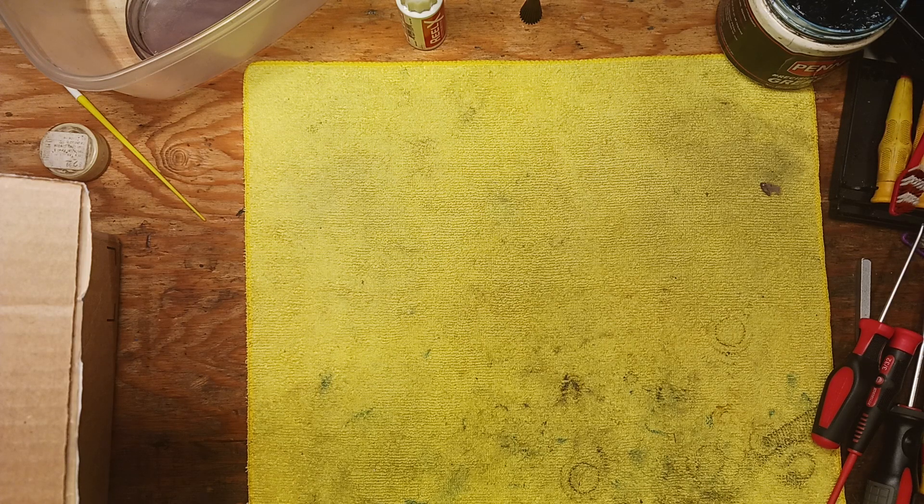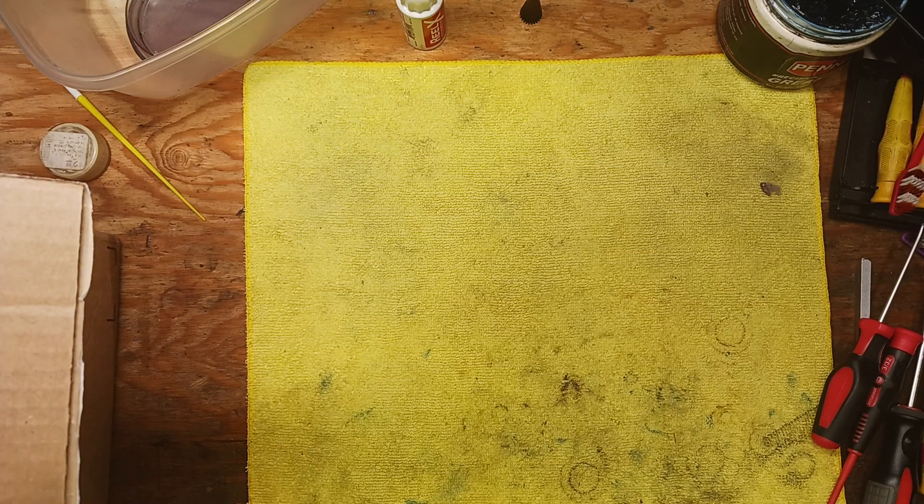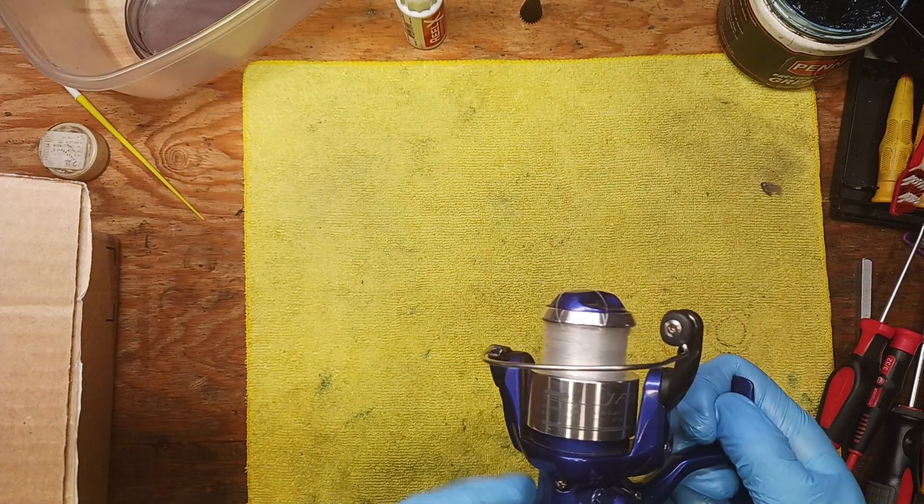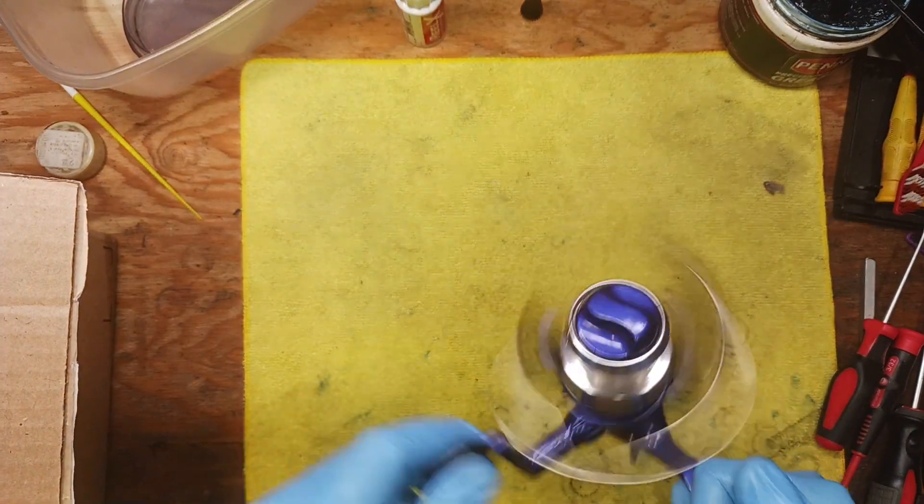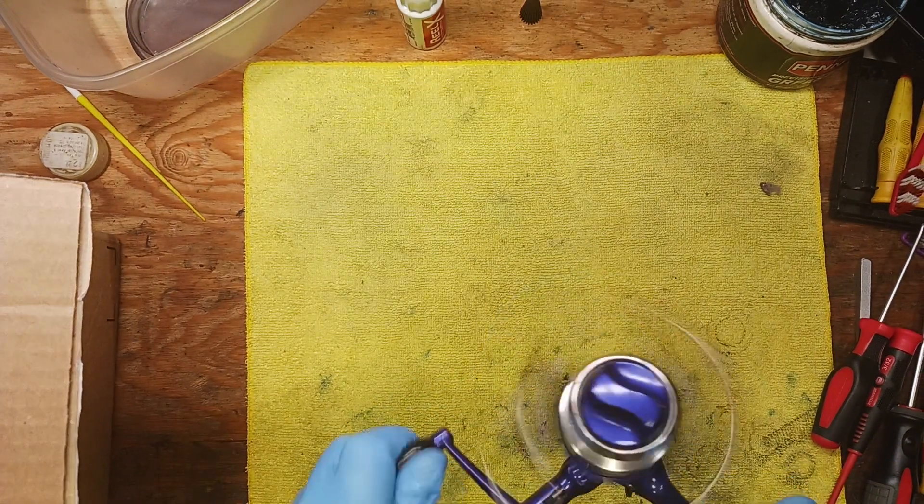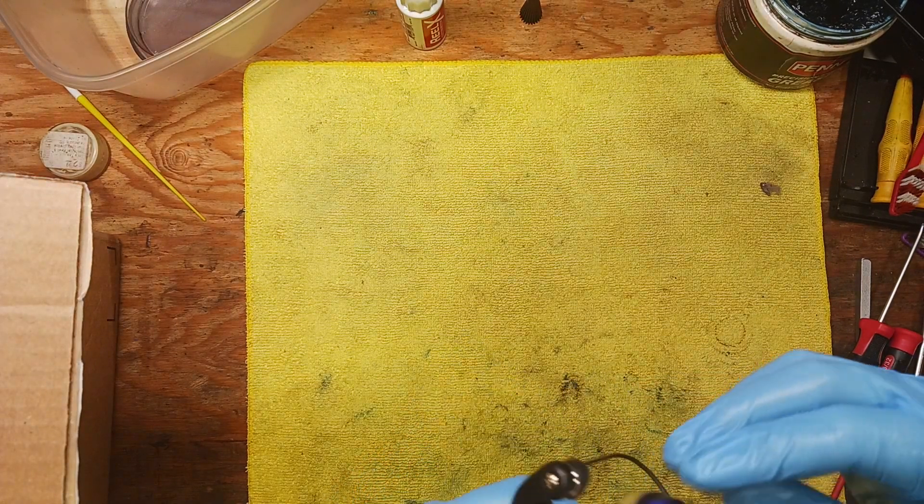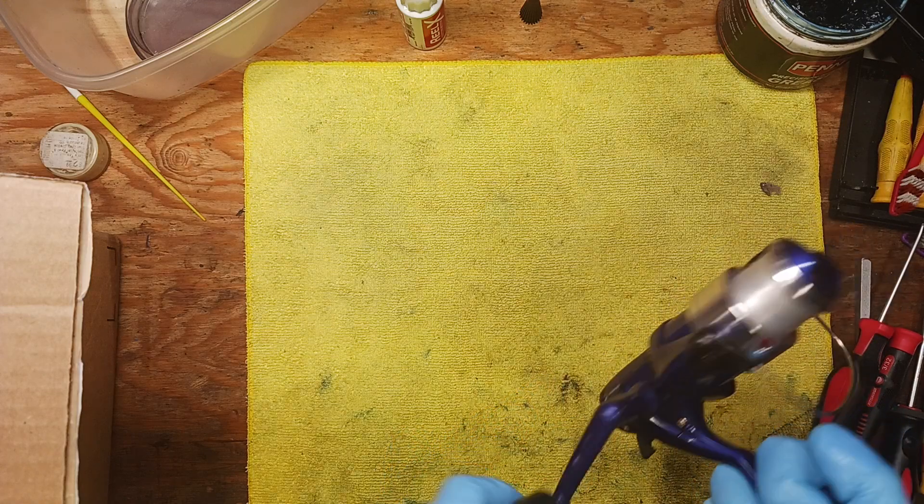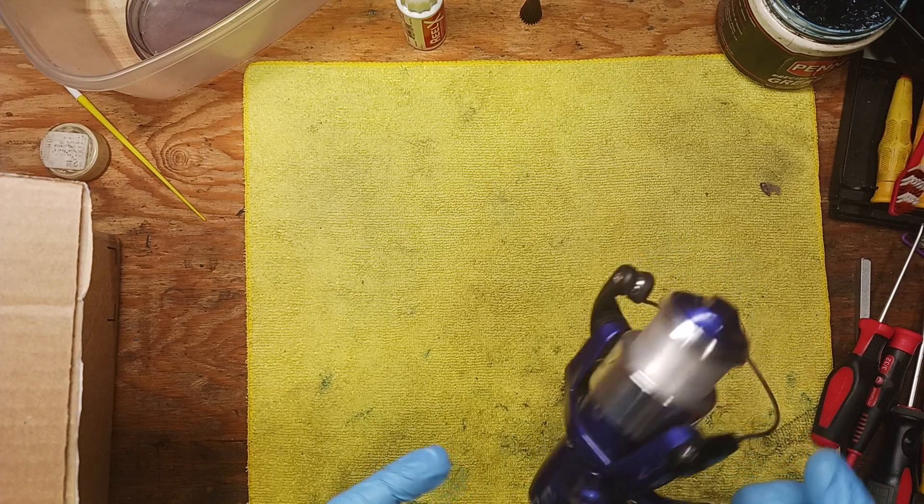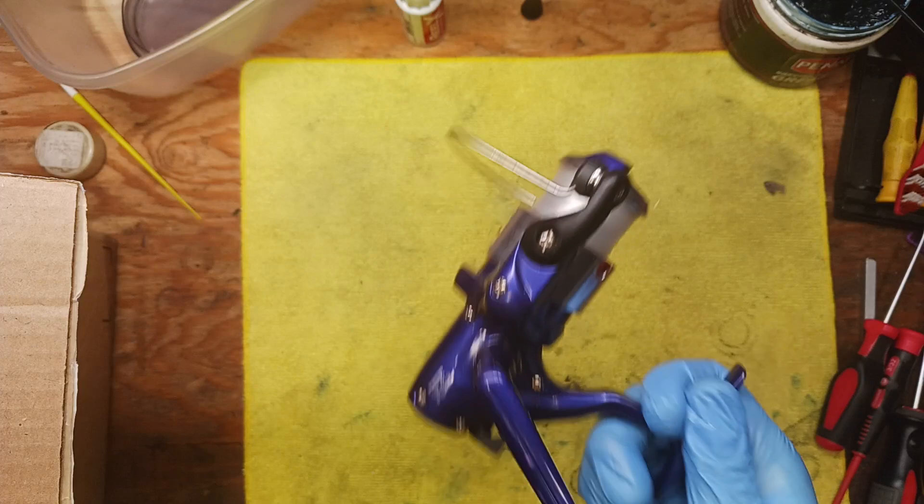Moving right along, looks like we've got another reel that's kind of similar. This is an Akuma Fin Chaser. This one is a little smoother than that Rapala, looks like it's functioning properly. Once again we've got some old line on here, so we're definitely going to do videos on all of these. It's not in too bad of shape. This is a nice little reel, perfect for trout fishing, lake fishing, stuff like that.